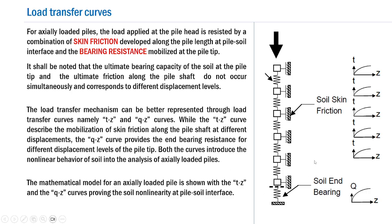For a better interpretation, the mathematical model for axially loaded piles is shown on the right side. This is our pile, and you can also represent the compressibility of the pile through the A into E by L term. There are basically two elements: one is the soil skin friction element that includes the TZ curves, and the other is the soil end bearing component represented through the QZ curves.